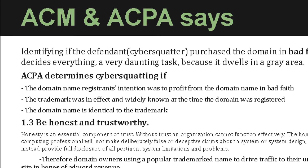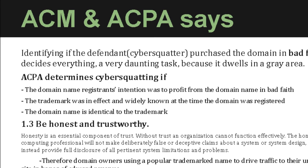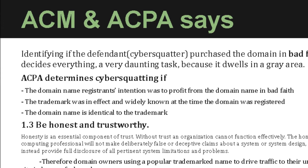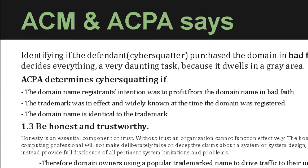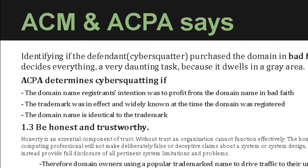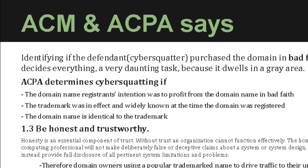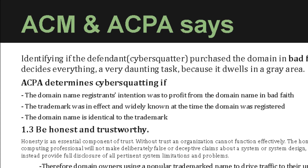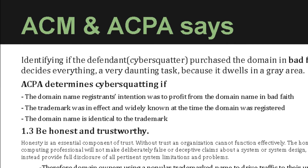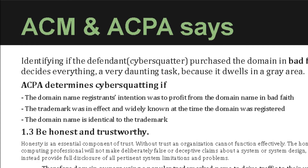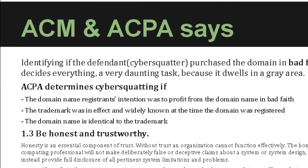The remaining five provisions go against the cybersquatter. Factor 5: Intent to divert to a site that could harm the trademark owner's goodwill, either for commercial gain or with intent to tarnish by creating a likelihood of confusion as to source, sponsor, affiliation, or endorsement of the site. Factor 6: Offer to sell the domain name without having used or having an intent to use it. Factor 7: Intentional provision of misleading contact information in the domain name registration application or a history of such conduct. Factor 8: Warehousing of multiple domain names known to be identical or confusingly similar to distinctive marks, or dilutive of famous marks. Factor 9: The extent to which a mark is distinctive or famous.